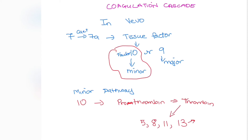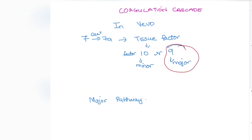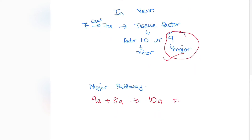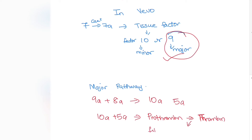In the major pathway, 7a activates tissue factor which activates factor 9 instead of factor 10. When factor 9 is activated (9a), and recall that 8a was already activated by thrombin in the minor pathway, these two together activate factor 10 to 10a. Factor 5a is also activated. Then 10a and 5a together activate prothrombin to thrombin, thrombin converts fibrinogen to fibrin, and fibrin activates factor 13, which forms the fibrin clot.